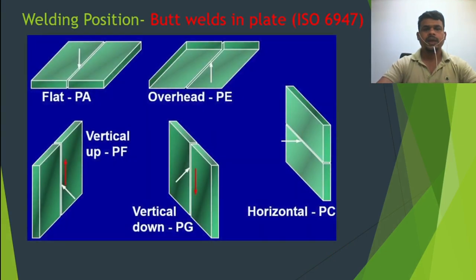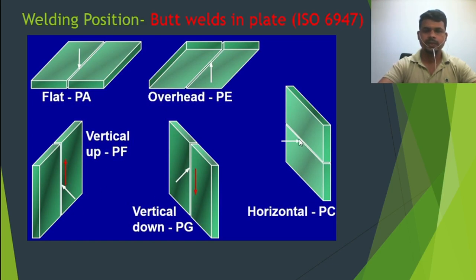Now let's see the butt weld in plate. The flat position is PA — you are welding from on top. Then overhead is the PE position. Then vertical up and vertical down. Horizontal is the PC, which is the 2G position. So for butt weld in plate, you have flat, overhead, vertical up, vertical down, and horizontal — PC or 2G.